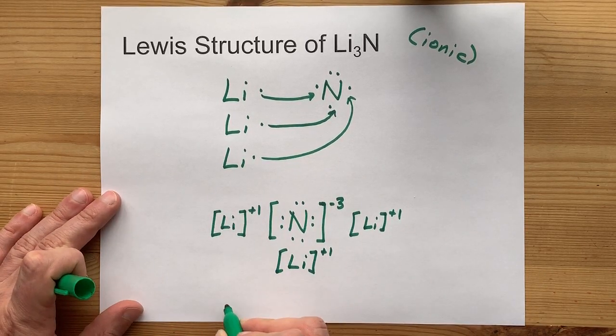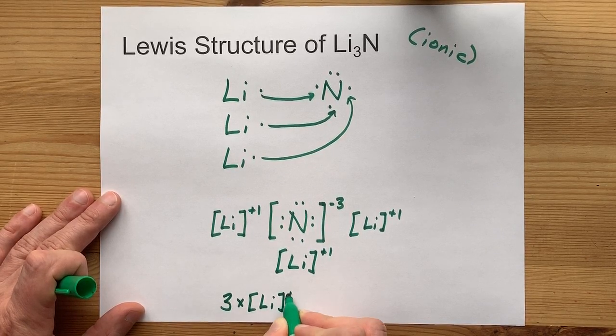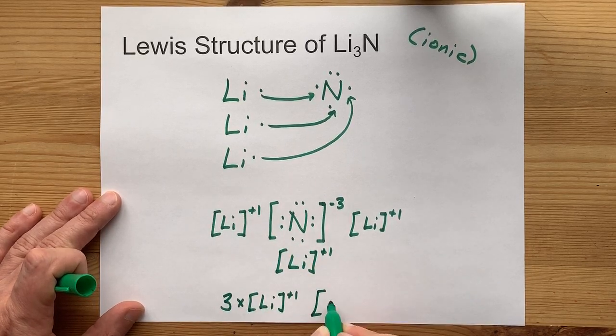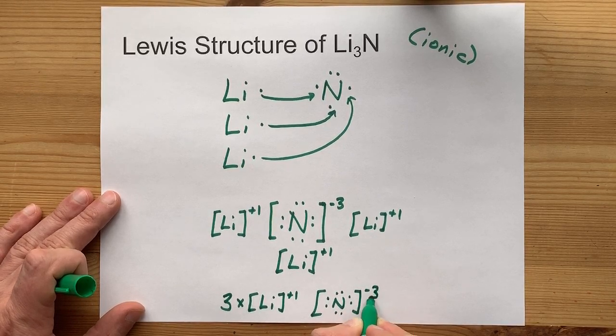Some teachers are going to allow you to take the shortcut of writing three times Li plus one instead of rewriting the Li three times. But, if that's the case, you still have to write the N with the minus three charge.